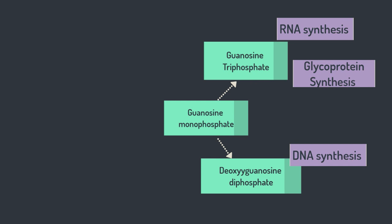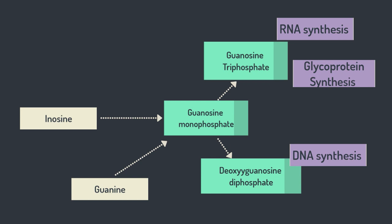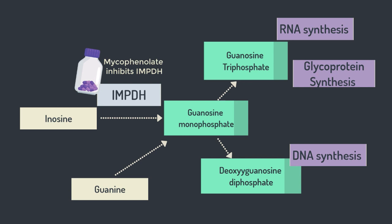Coming back to mycophenolate — this drug blocks IMPDH, the enzyme important for guanosine synthesis. Insert mycophenolate into this pathway and suddenly we have less guanosine, which means less cell cycle activity, which we can use to inhibit proliferation of lymphocytes. Whilst we can sum up mycophenolate as an anti-proliferative for our MCQs, that is rather an oversimplification.